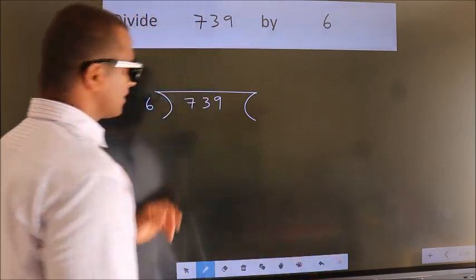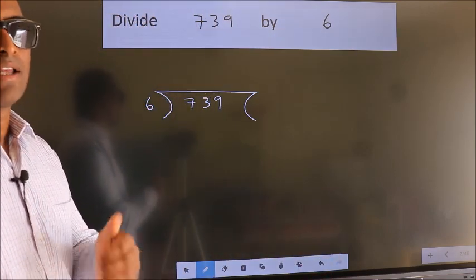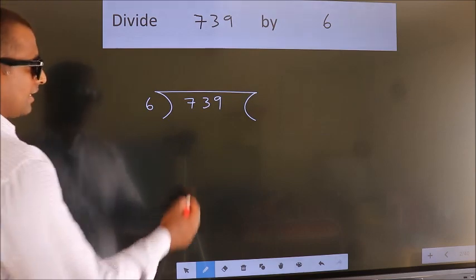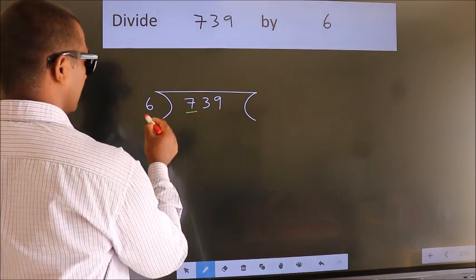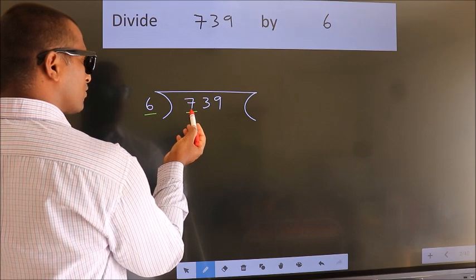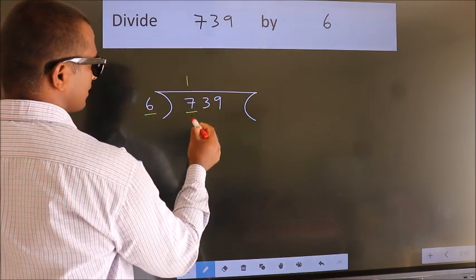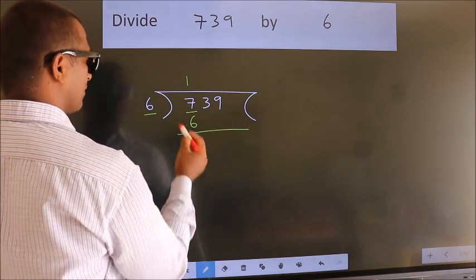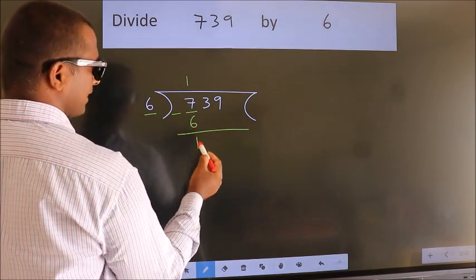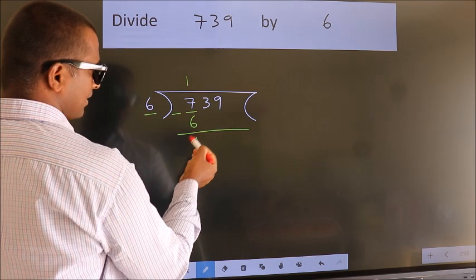This is step 1. Next, here we have 7, here 6. A number close to 7 in the 6 table is 6 ones, which is 6. Now we subtract and get 1.